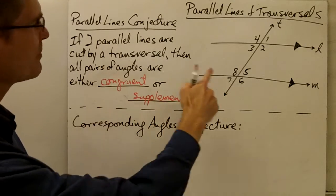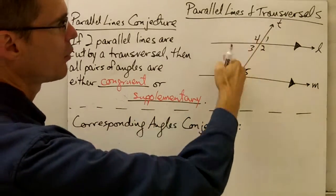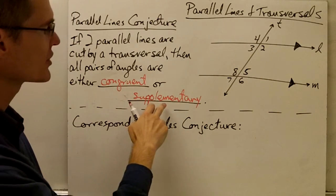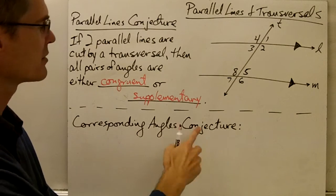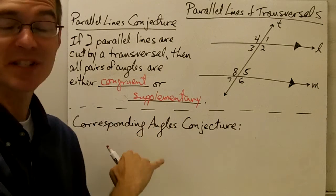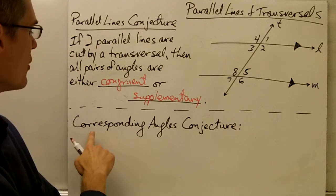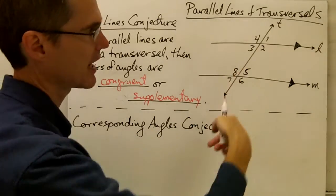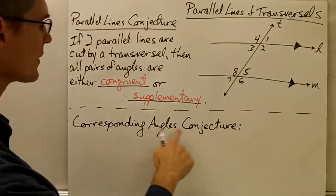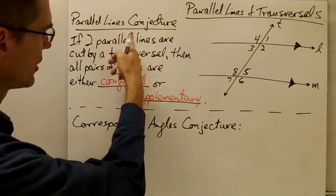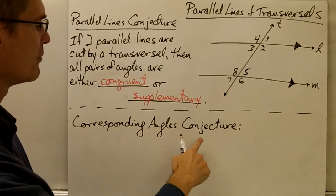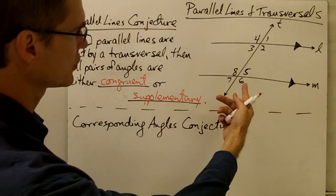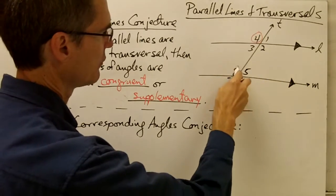So if every pair of angles formed when I have two parallel lines cut by a transversal is either congruent or supplementary, I'm going to go on and make some more conjectures having to do with some specific pairs of angles. We already know about corresponding angles — we can identify corresponding angles anytime we have lines cut by a transversal. So based on this general conjecture, I'm going to make a more specific conjecture about corresponding angles. For example, in this picture, a pair of corresponding angles might be angle 4 and angle 8.